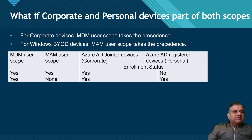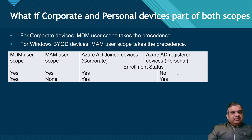For Azure AD registered devices — your BYOD or workplace joined devices — MAM will take precedence. Since MAM is meant for mobile application management, it is not going to enroll the device, so the enrolled status will show as No.